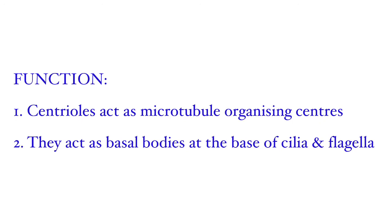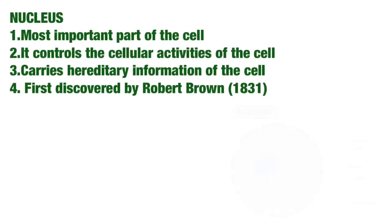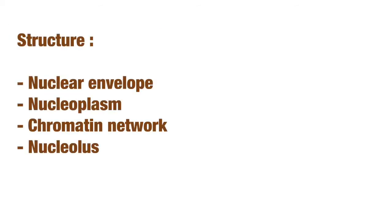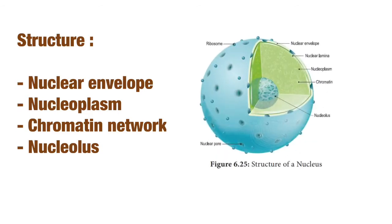The nucleus is the most important and essential part of the cell — it controls all cellular activities and carries the hereditary information of the cell. The nucleus was discovered by Robert Brown in 1831. Its structure has four important parts: the nuclear envelope, nucleoplasm, chromatin network, and nucleolus.